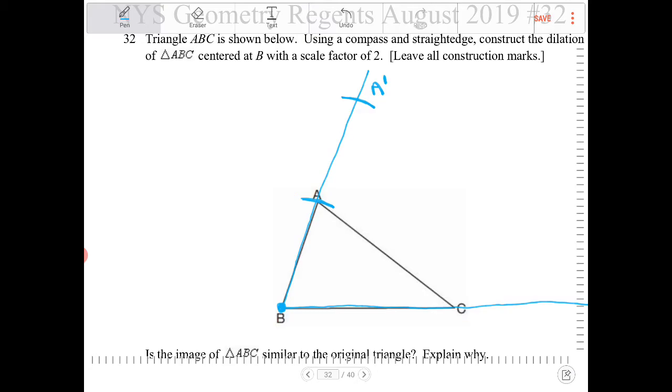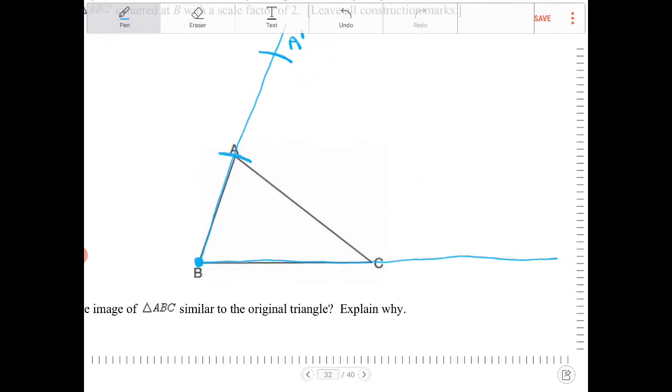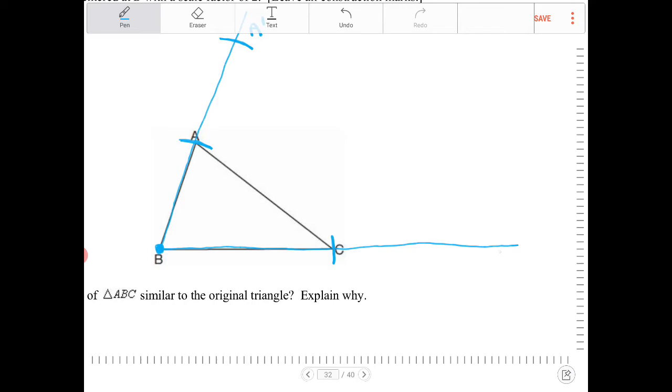So B A prime is twice as long as B A. You're going to repeat this with B C. You're going to place your pin on B and lead on C. Pick up the compass, do not change the compass setting with the opening of B C right now. You're going to place your pin on C, and you're going to mark up the line, like so, and that right there, the intersection of that arc and the extension there is going to be your C prime.